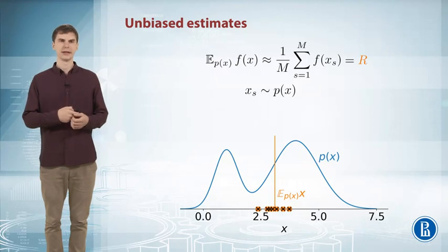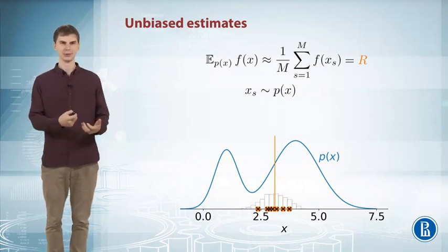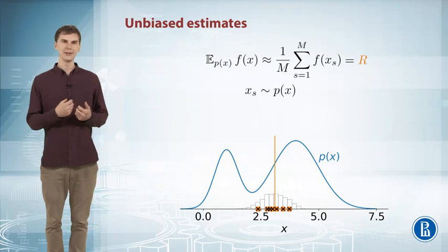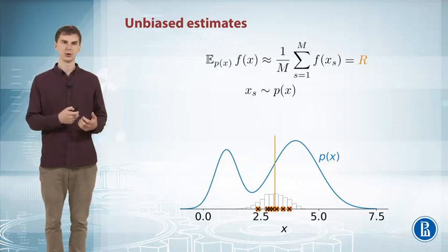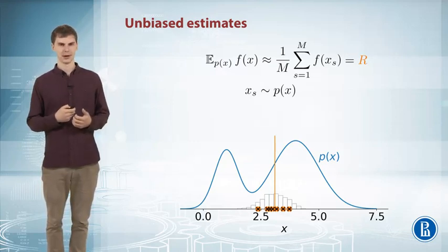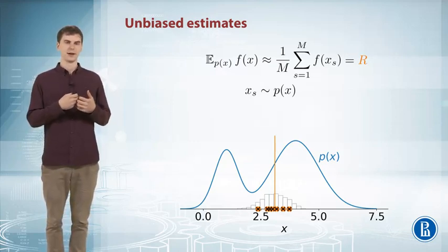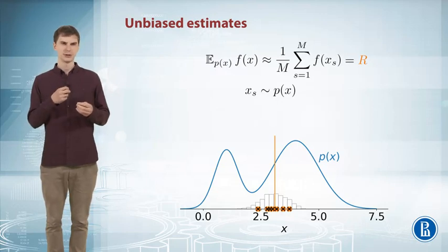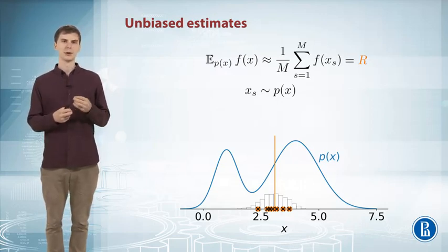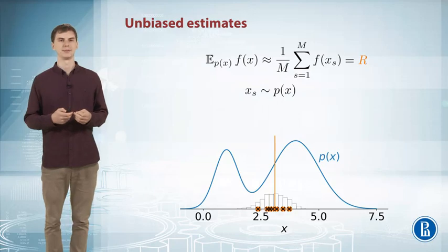And this random variable has its own distribution. And its average, its expected value, exactly equals to the expected value of f(x) which we wanted to estimate. So you can see that all these samples from the random variable R are close to the expected value which we want to estimate, or around it.